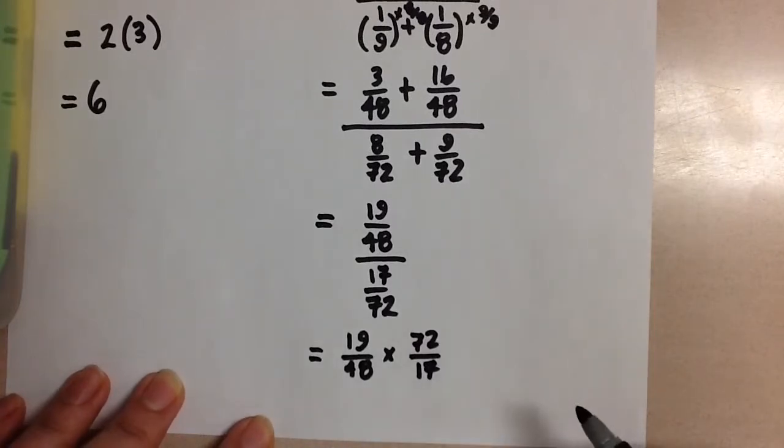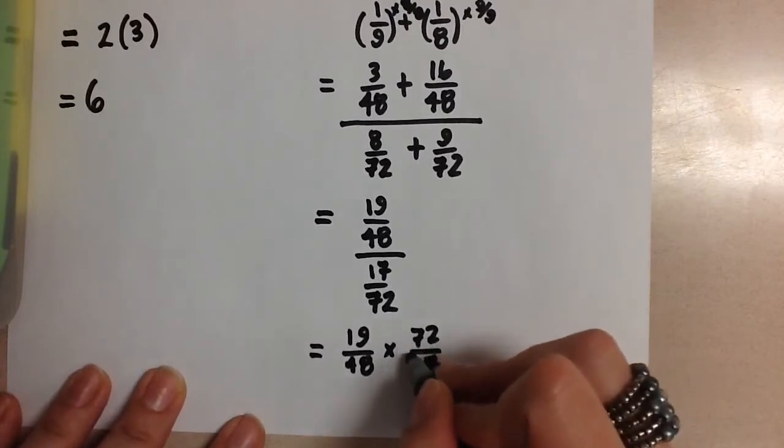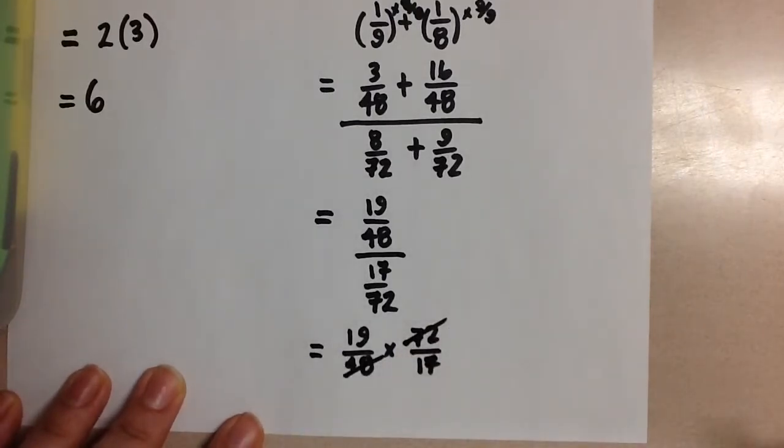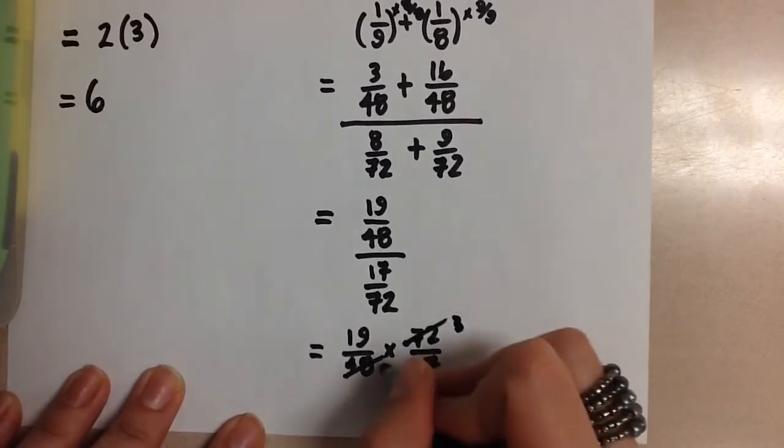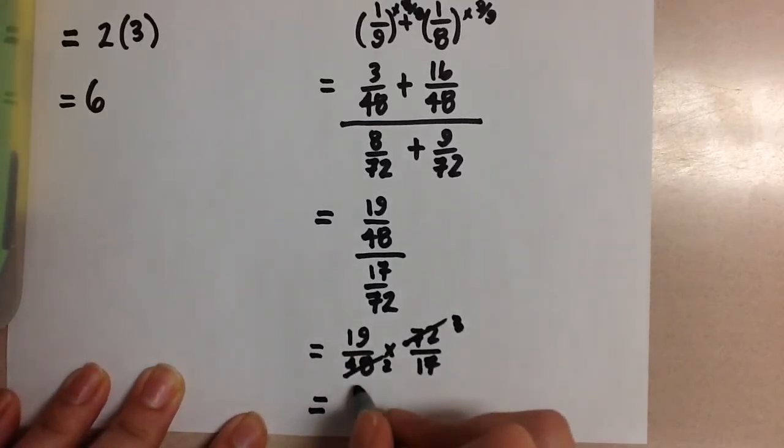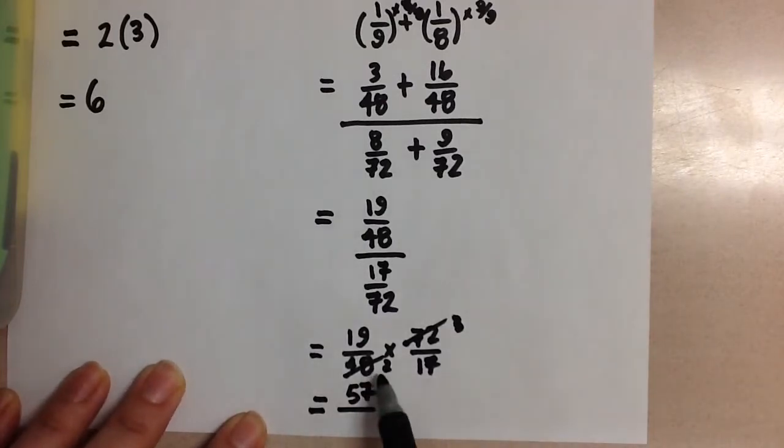So we can just go ahead and multiply this. We can do some reducing before we do that. We can reduce 72 and 48 by dividing by 24 and we get 3 and 2 here. So 19 times 3 is 57 and 2 times 17 is 34.